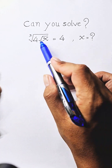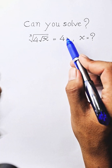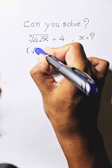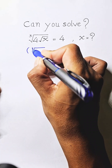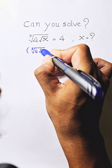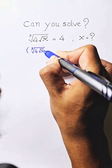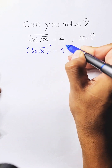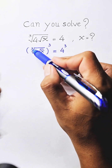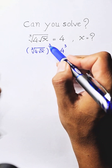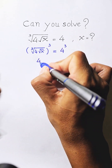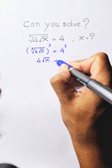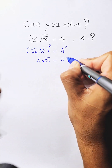The first step: we raise both sides of this equation to the power of 3, so we get cube root of 4 times square root of 8, all to the power 3, equal to 4 to the power 3. Then we simplify the cube root with the power 3, so we get 4 times square root of 8 equals 64.